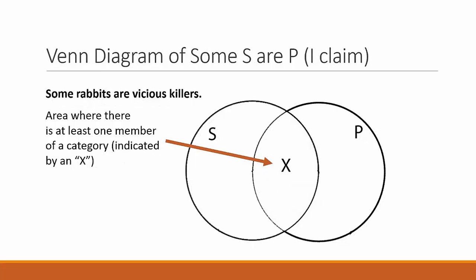To diagram the particular categorical claims — some S are P and some S are not P — place an X in the area of the circle where there is at least one example of that category. There is at least one S that is also part of the P category. No shading is used in particular claims, only in universal claims.